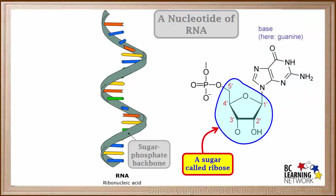The sugar in RNA is called ribose. In ribose, there is an OH group on the 2' carbon atom right here.